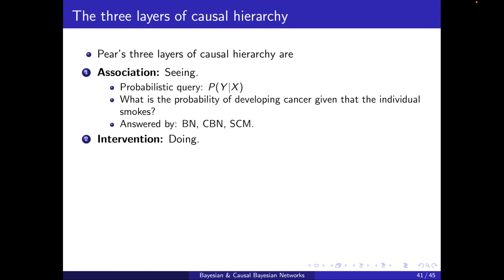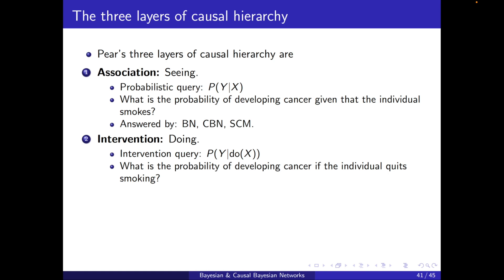The second layer, a deeper layer, is intervention — doing. The type of queries are intervention queries: P of Y conditioned on do(X). An example would be: what is the probability of developing cancer if the individual quits smoking? So now the individual is doing something — it's not that we observe the individual does not smoke. This can be answered only by causal Bayesian networks and structural causal models; Bayesian networks in general cannot answer such queries.